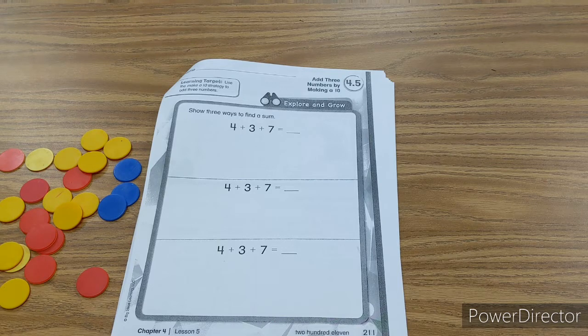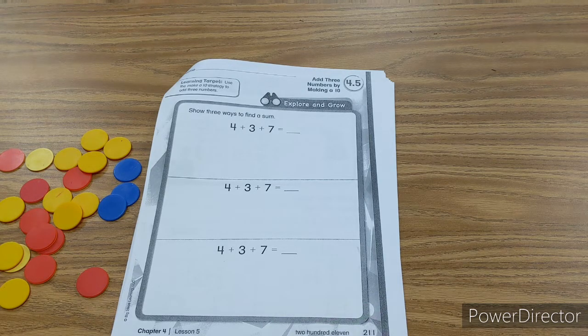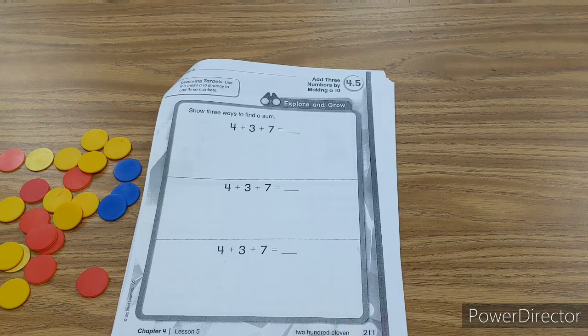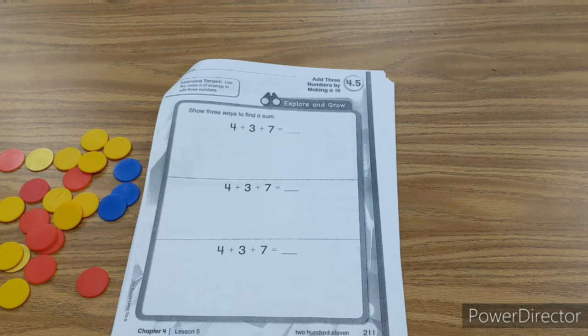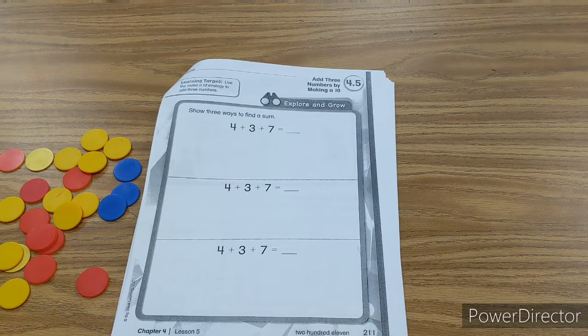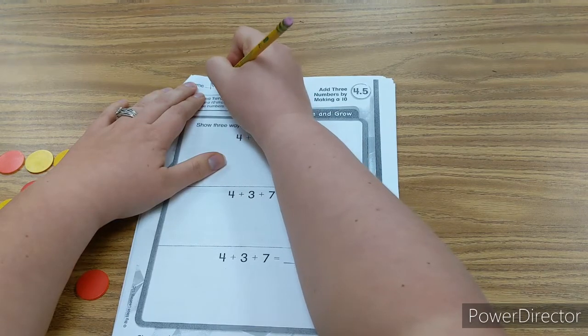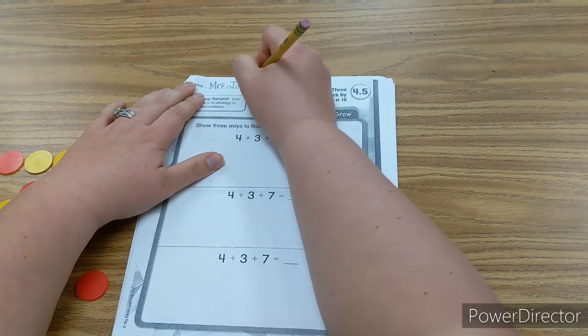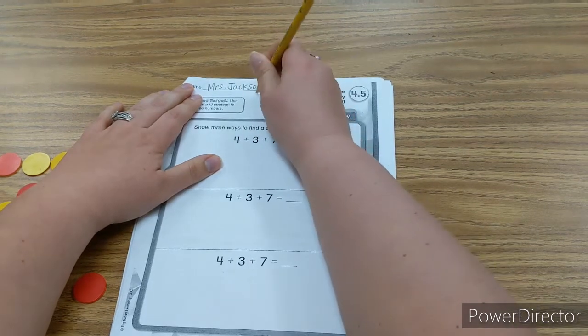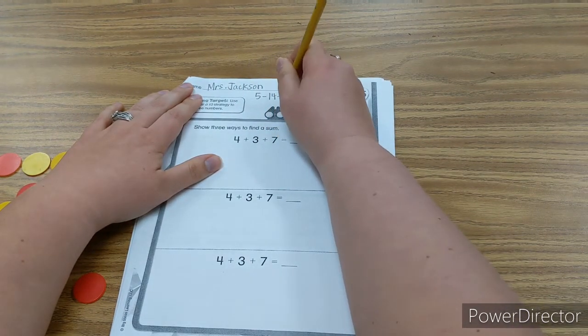So the first thing we need to do is write our name and date. If your name happens to be Berlin, you're going to write Berlin. If your name happens to be Gunner, you're going to write Gunner. If your name happens to be Oliver, you're going to write Oliver. But if your name is like mine, you're going to write Mrs. Jackson. And my date is 5-14-20.